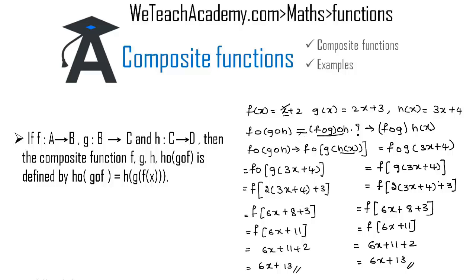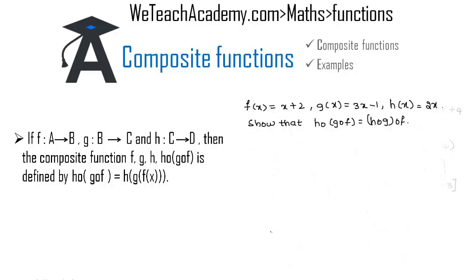Now let us consider another example. Here we have f of x equal to x plus 2, g of x equal to 3x minus 1, and h of x equal to 2x. We have to prove that h circle g circle f is equal to h circle g circle f.